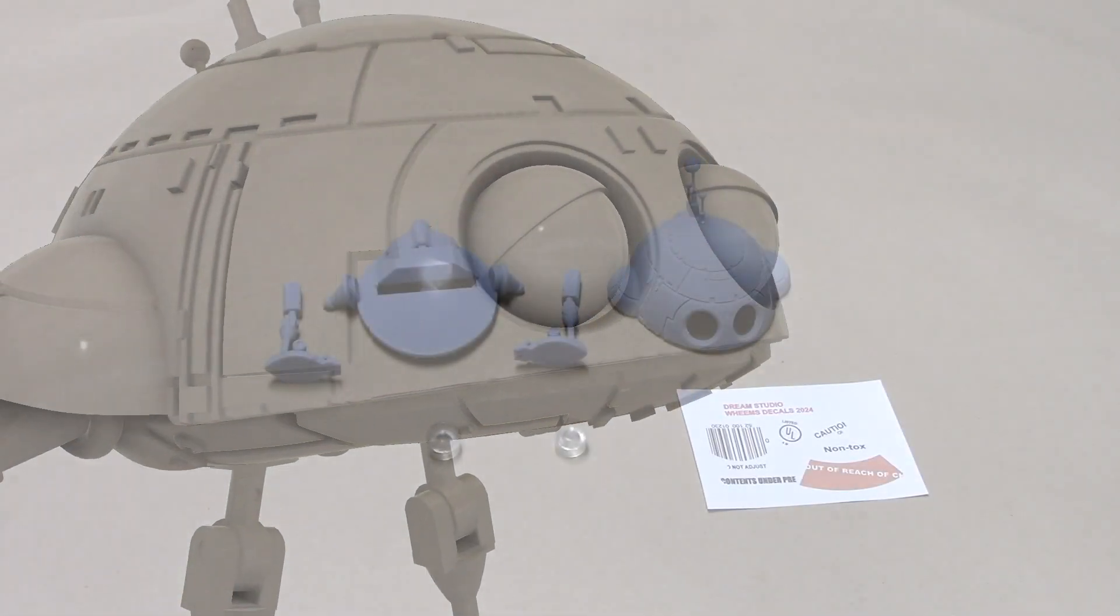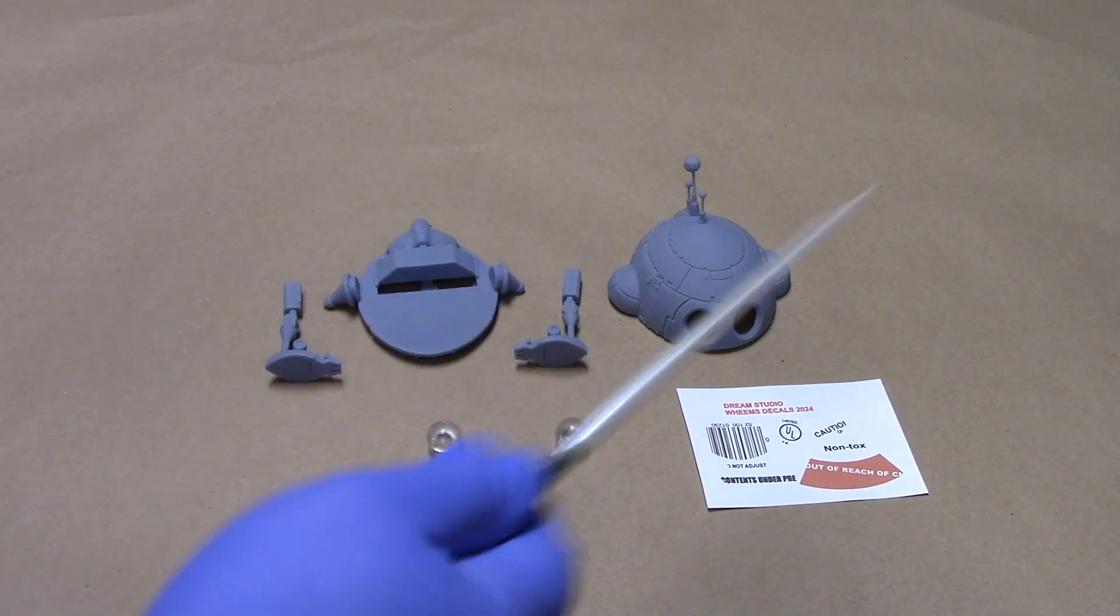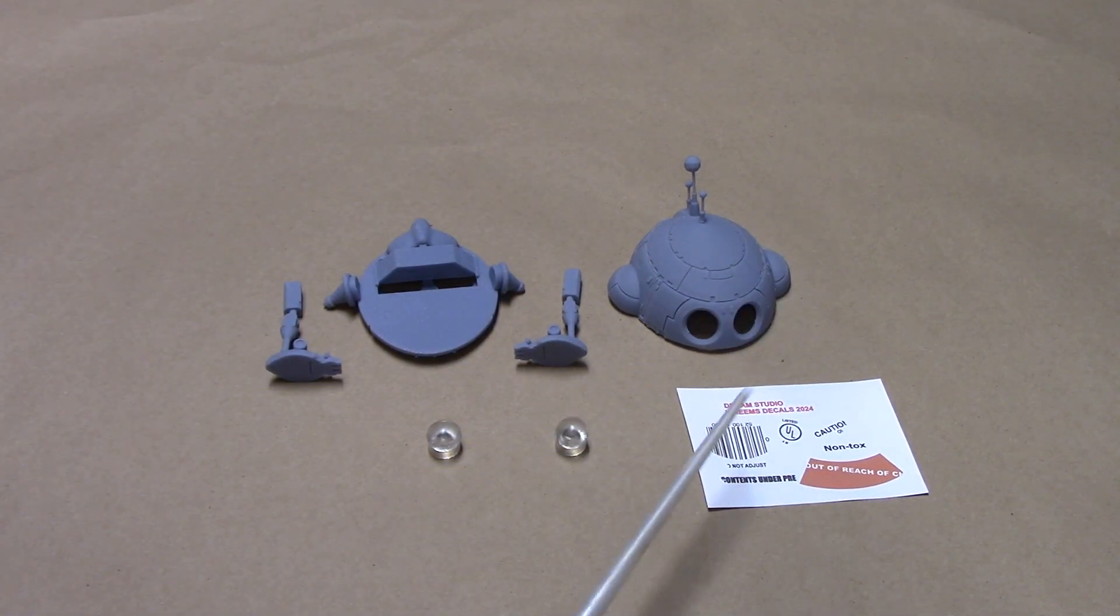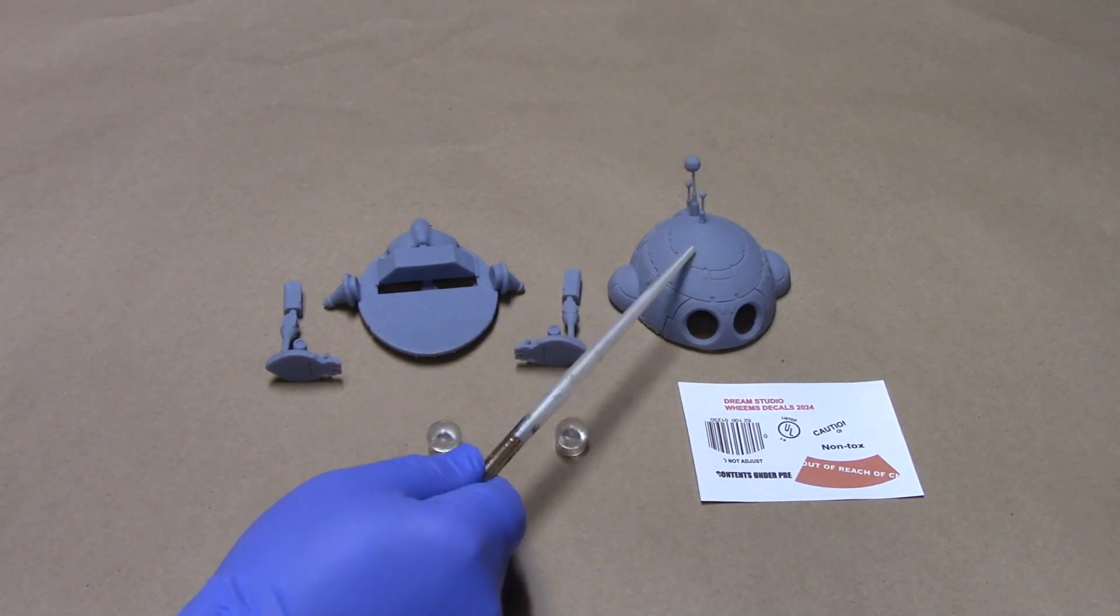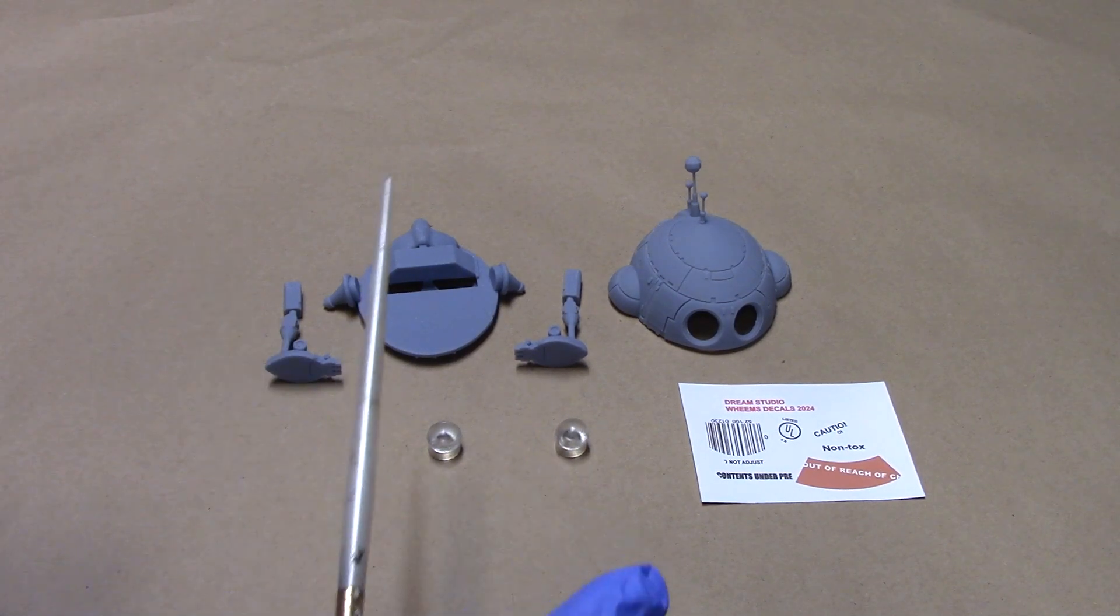I'm doing something a little different for this video. I'm doing a quick rundown of the parts for Weems. We've got the decal sheet, the top, the bottom, two legs, and two eyes. It's a really simple kit.